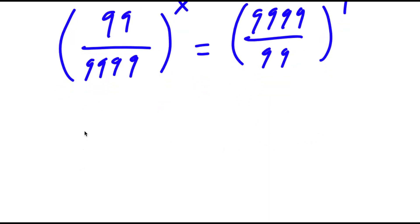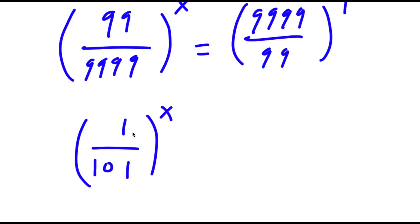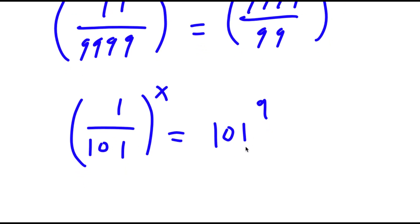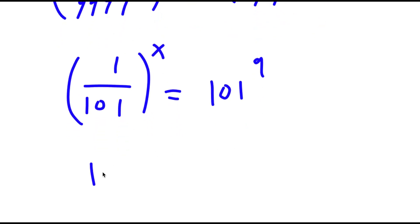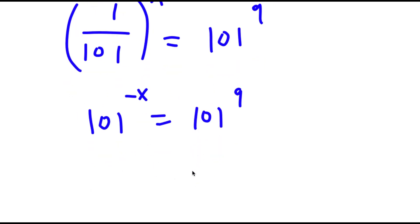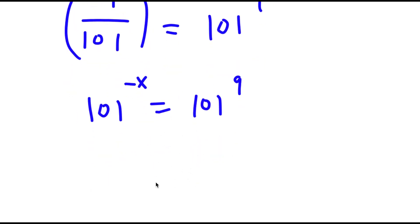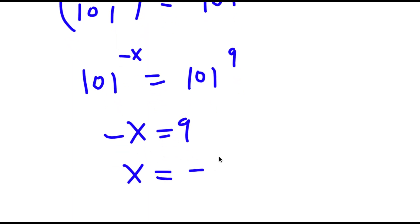This simplifies to 1 over 101 to the power of x is equal to 101 to the power of 9. This is the same thing as 101 to the negative x equals 101 to the 9, meaning that negative x is equal to 9 and x is equal to negative 9.